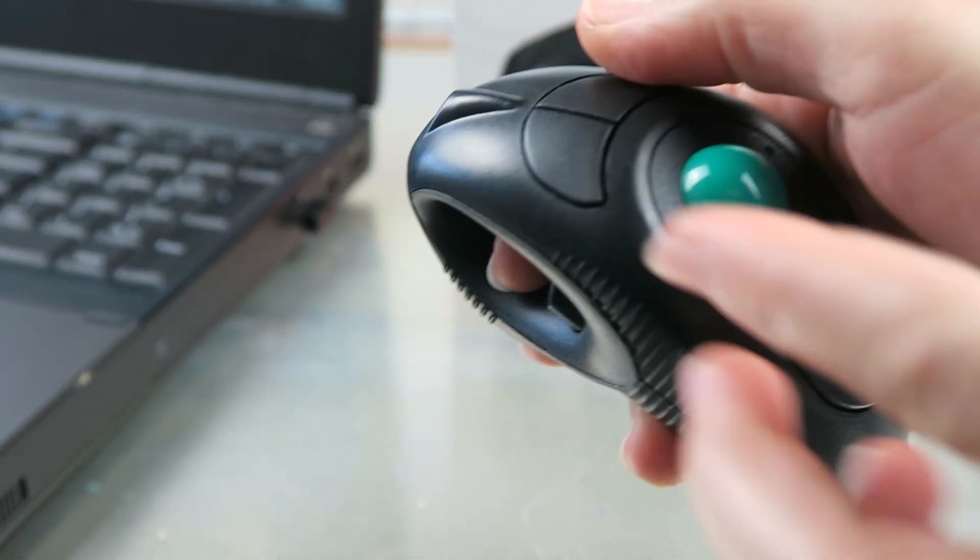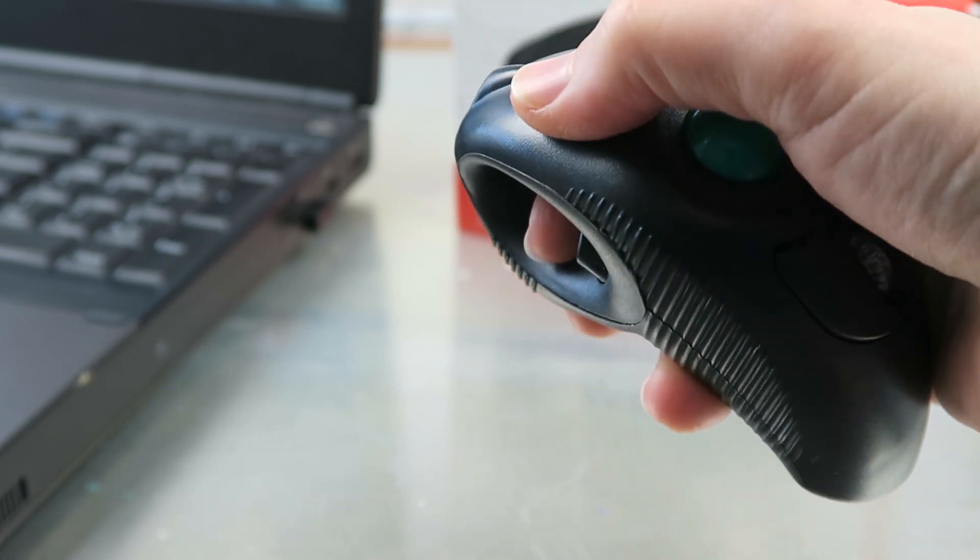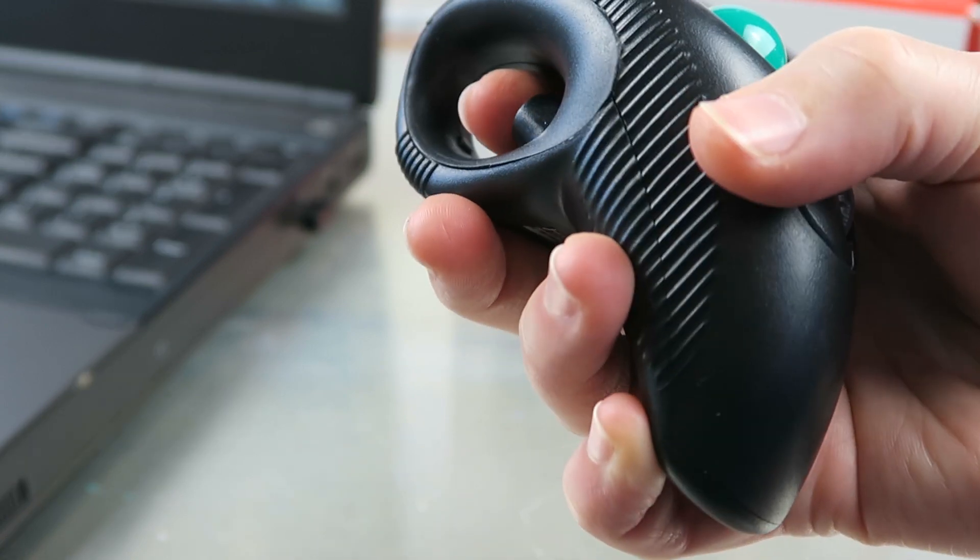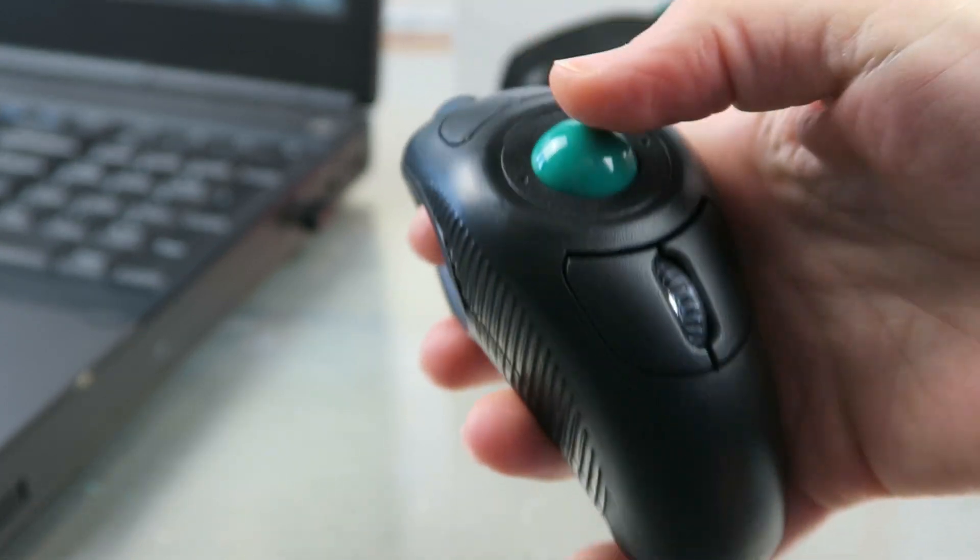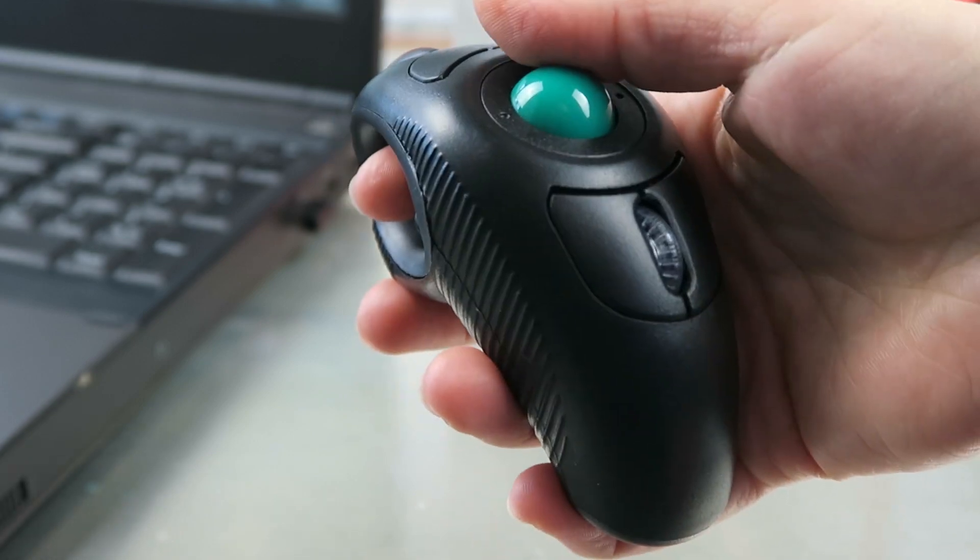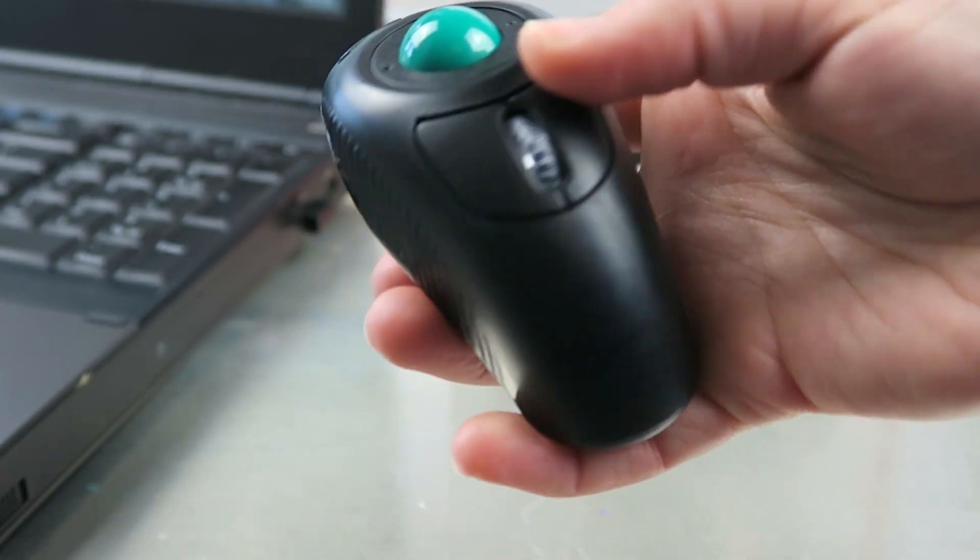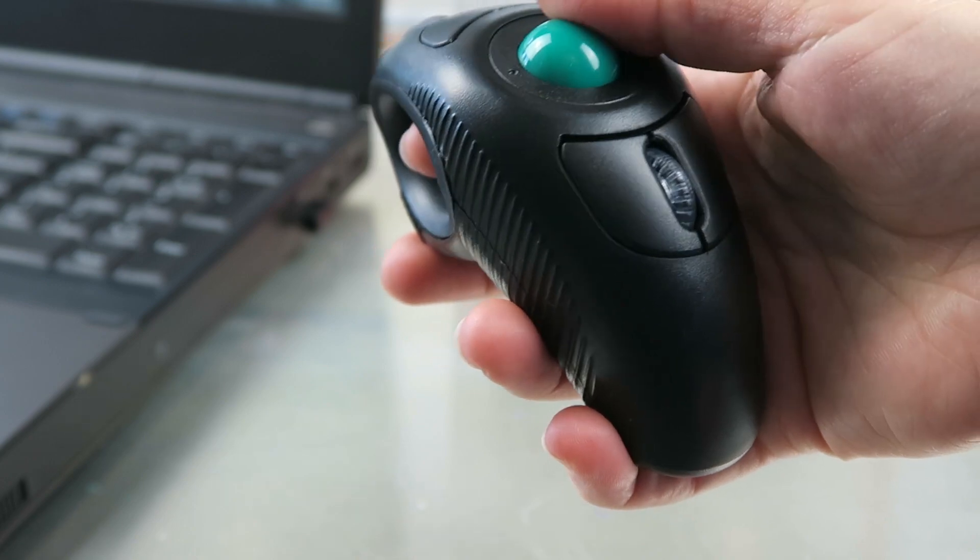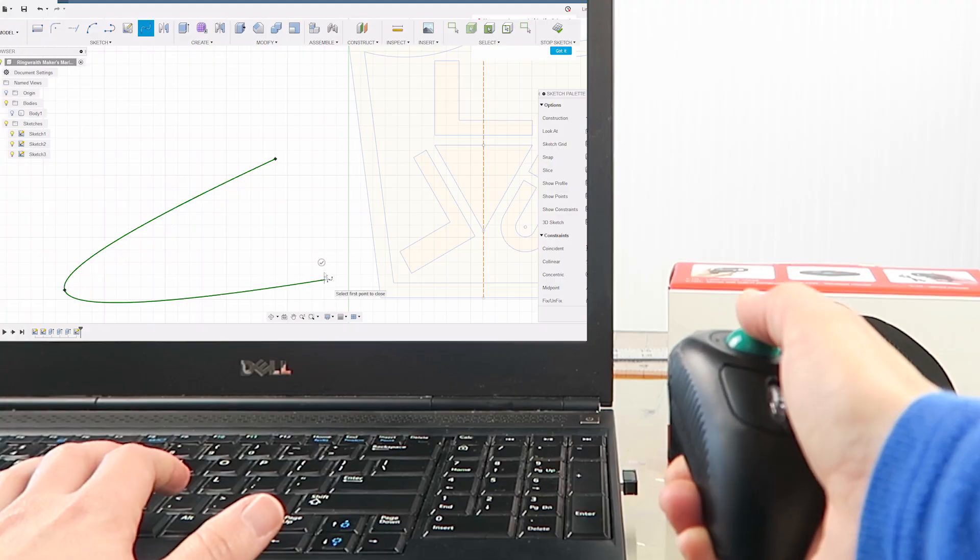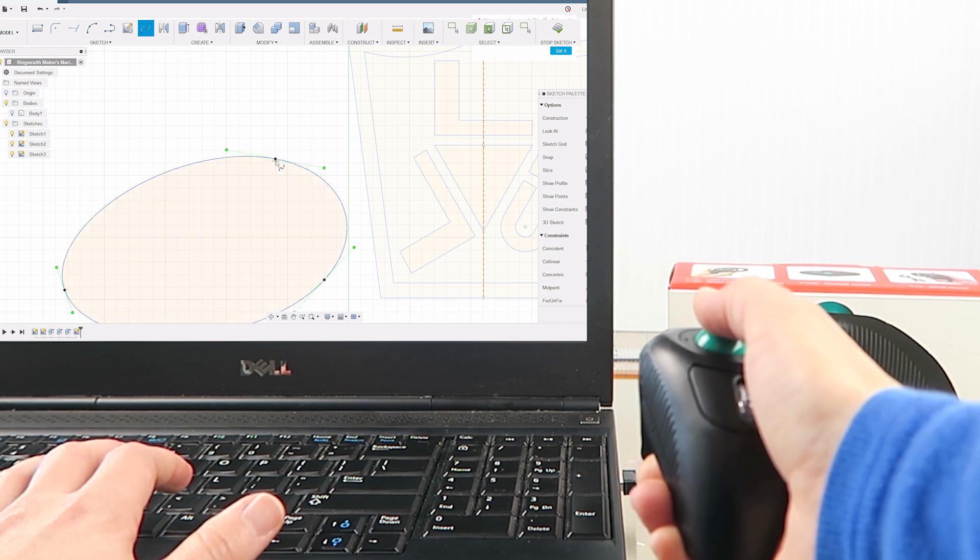So this button is for the laser pointer, which I have no use for. But the other buttons, you have your left click, right click, tracking ball, and then you've got more click buttons here. I think they just do the same thing, although maybe you can program them. I'm not sure. So let's go over to the computer and see how well this one works.